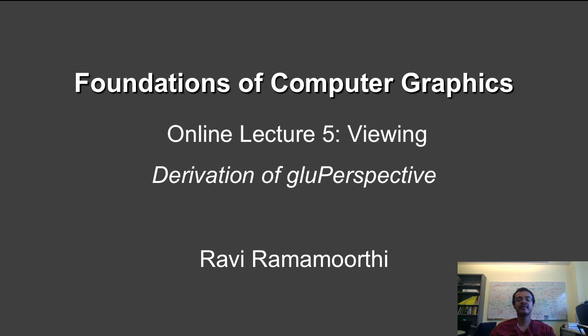At the end of the last lecture, we derived the GLU LookAt transformation in order to place objects in the 3D world for a given camera. In this lecture, we are going to talk about the GLU perspective transformation, which transforms the 3D world appropriately to place objects onto the screen. The entire transformation pipeline will include first a GLU LookAt or equivalent camera transformation, and then the viewing or projection transformation.